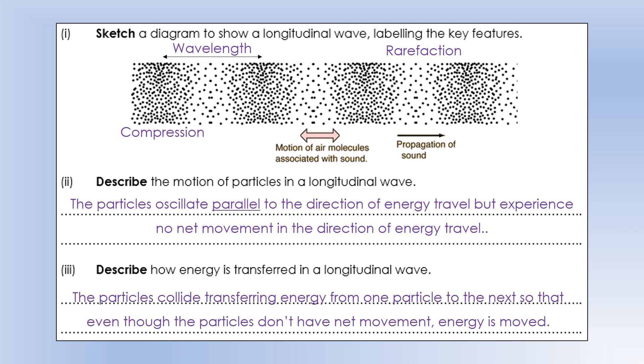So how is energy transferred? Well, the particles collide, transferring energy from one particle to the next. So even though the particles don't move, energy is moved. And that's what's happening in an alternating kind of circuit.